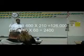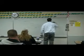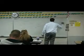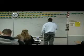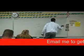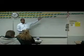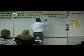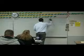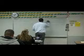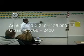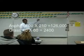Then you subtract the grass from the asphalt. So you have 600 times 210 for the asphalt area, which equals 126,000, and then 40 times 60 for the grass, which is 2,400. Subtracting the grass from the asphalt gives you the asphalt area.